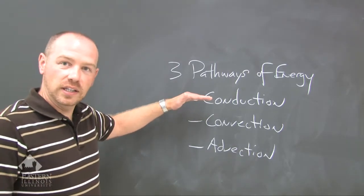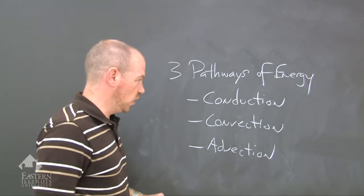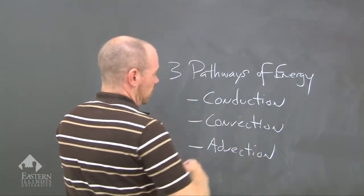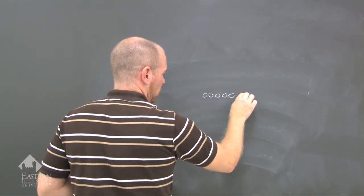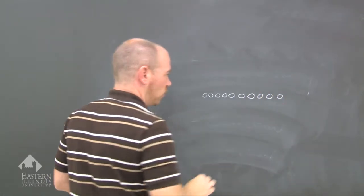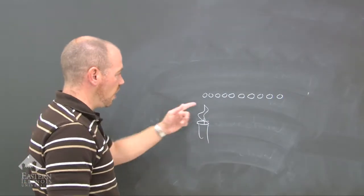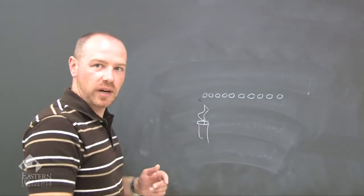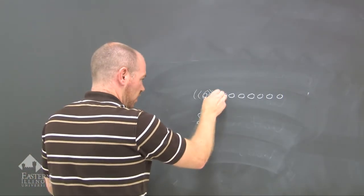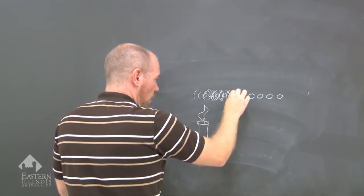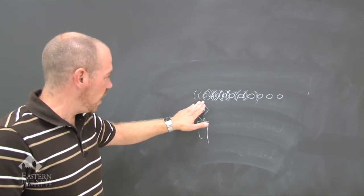Conduction is a linear movement of energy, convection is a vertical movement of energy, and advection is a horizontal movement of energy. Conduction is relatively simple — what happens is you get molecules that are right next to each other within an iron rod. If we apply heat to a molecule, it begins to vibrate. When you apply heat, molecules move faster, and it's a domino effect where the whole rod begins to vibrate and the iron rod begins to glow red.